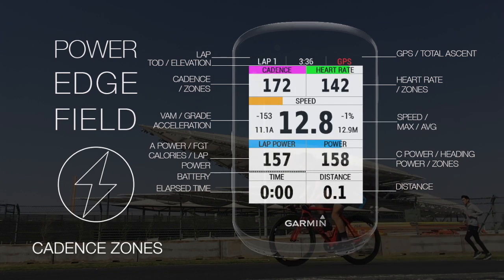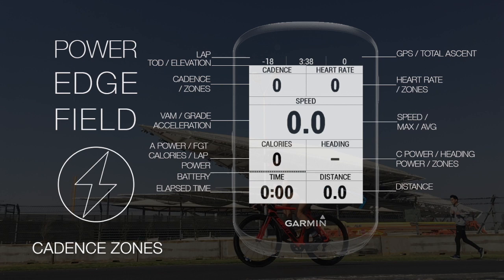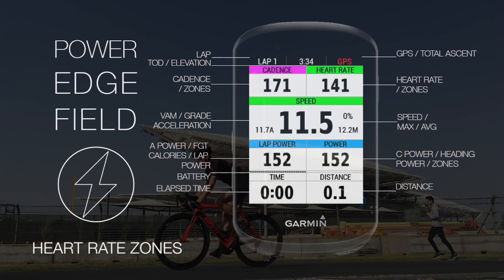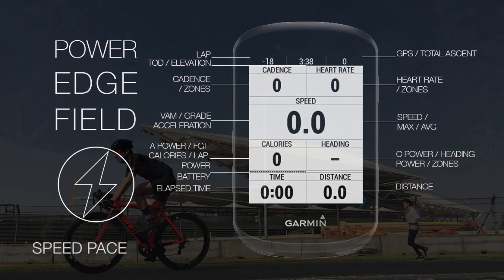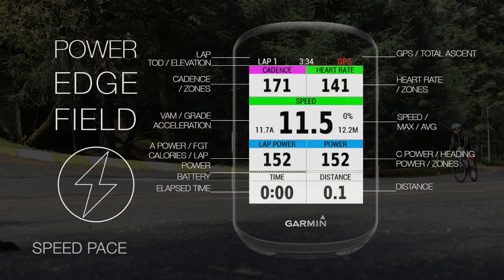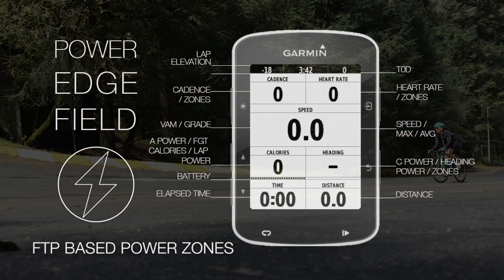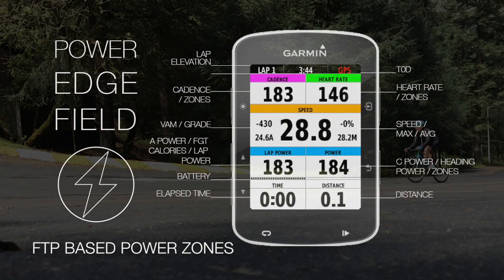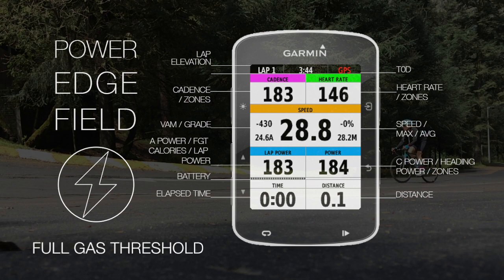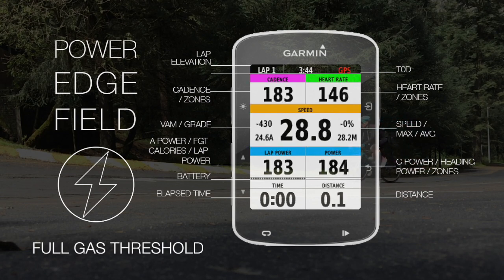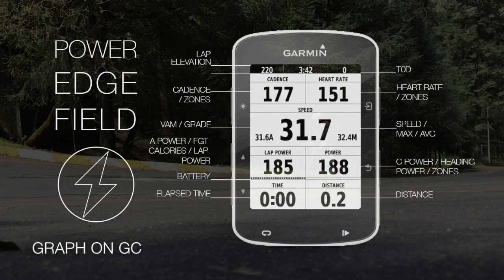Cadence uses zones based on professional standards. Heart rate uses zones based on your profile. Speed uses color zones for maintaining pace. Power uses zones based on the Andy Coggan or Joe Friel model with your FTP. Full Gas Threshold is a formula that calculates the maximum time you can go ahead of your FTP.